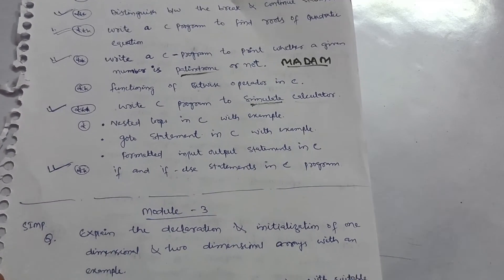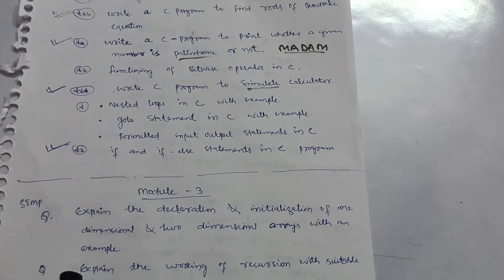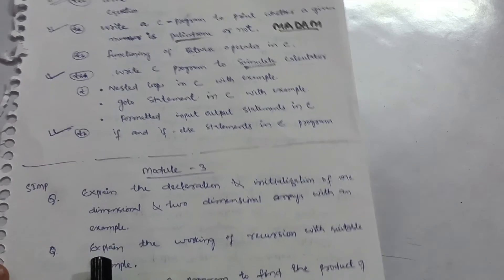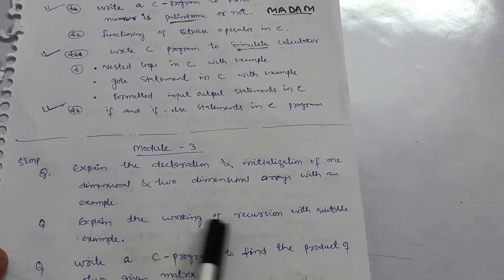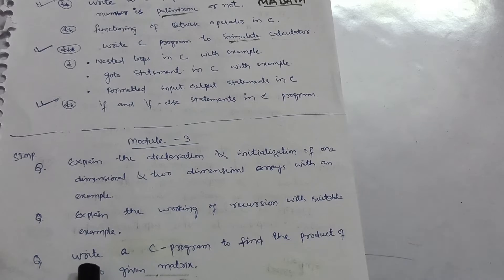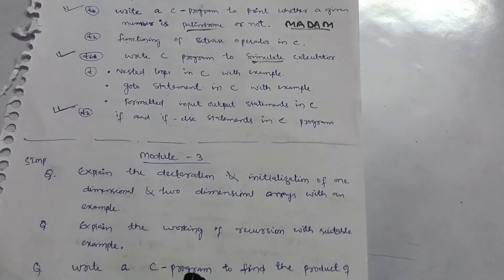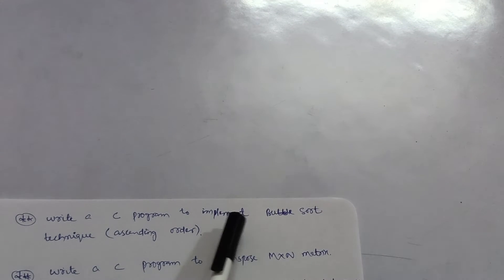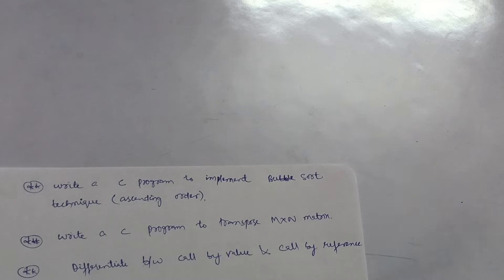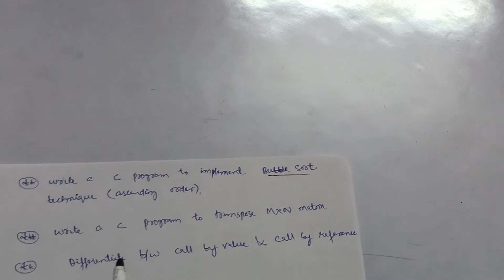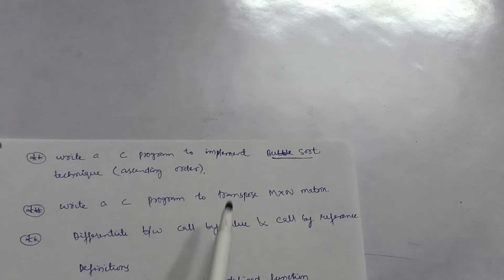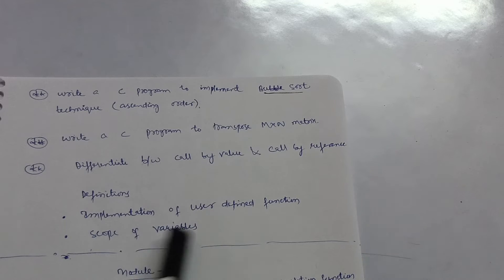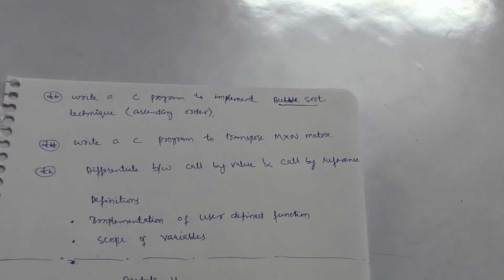In Module 3, the super-important question — also asked in the 2018 scheme — is 'Explain the declaration and initialization of one-dimensional and two-dimensional arrays with an example.' Next, explain the working of recursion with suitable examples. Write a C program to find the product of two given matrices. Also cover bubble sort in ascending order — always asked in examinations — write a C program to transpose an M×N matrix, differentiate between call by value and call by reference, and implementation of user-defined functions and scope of variables.